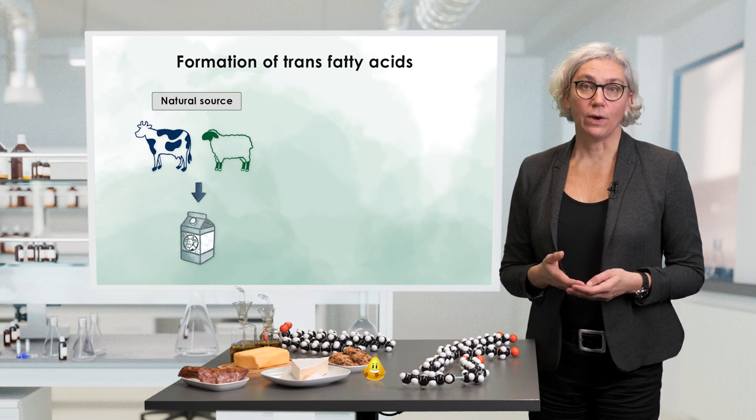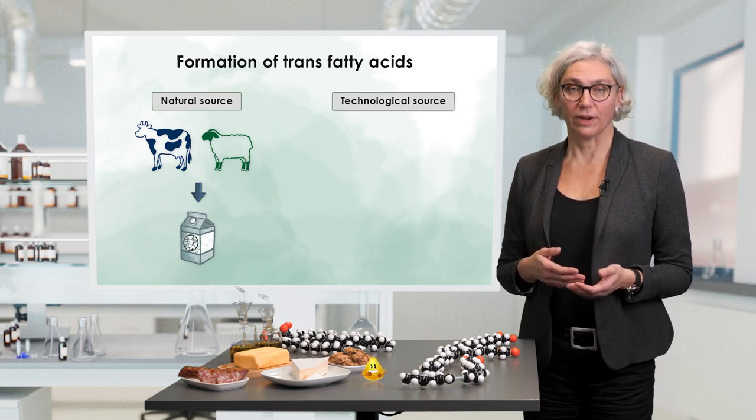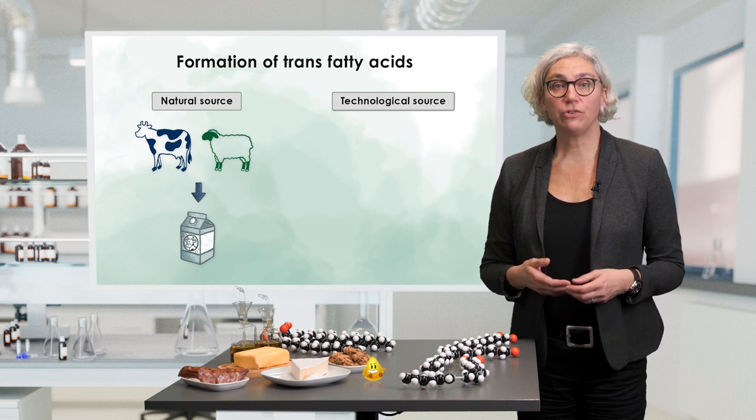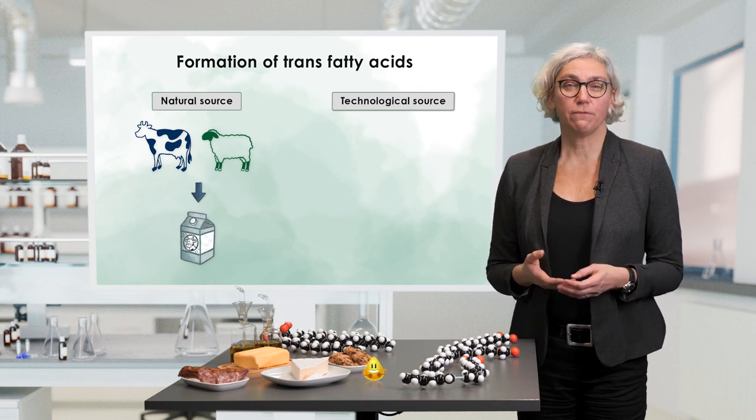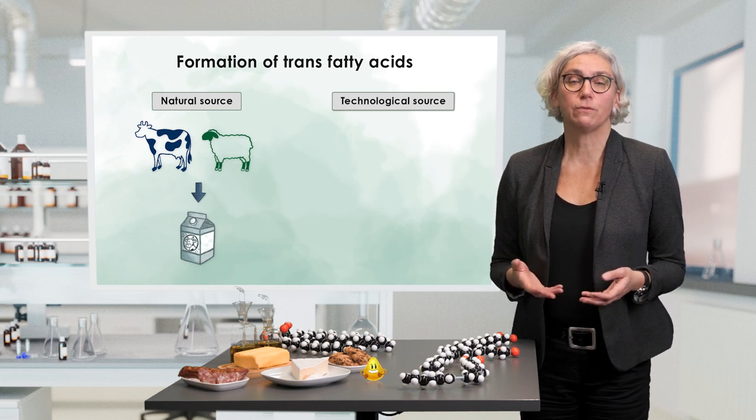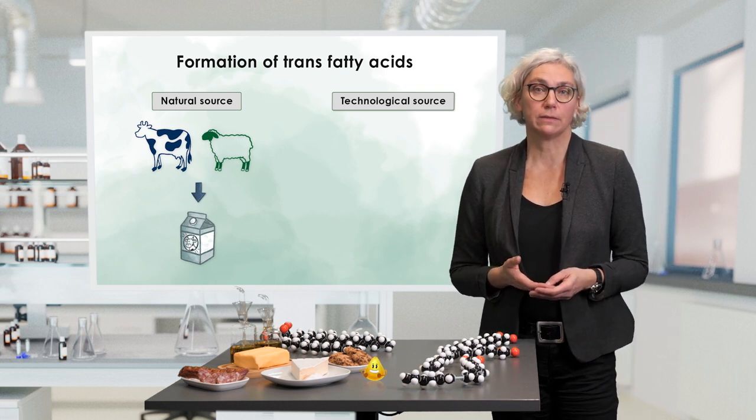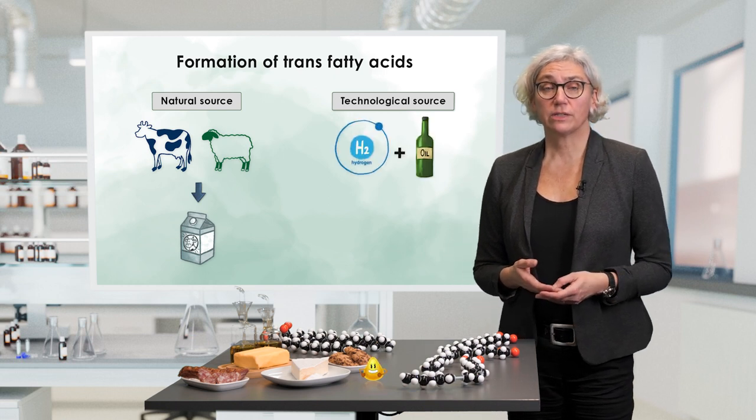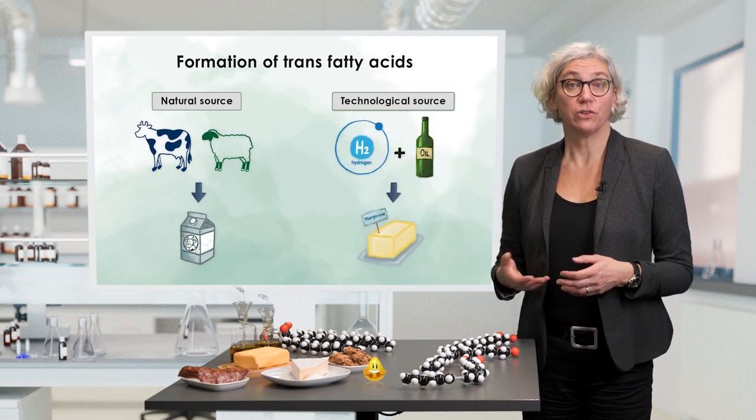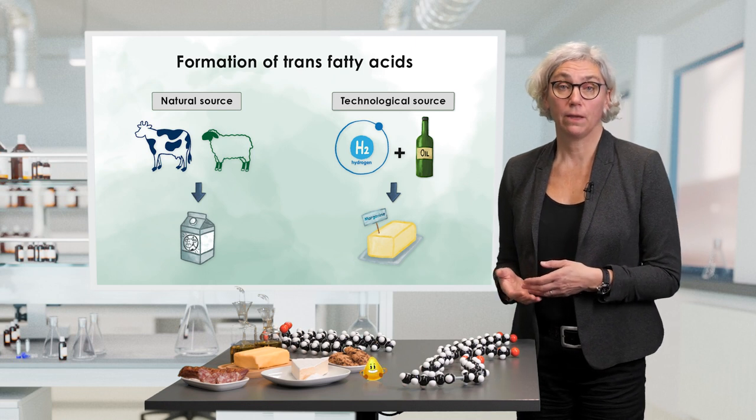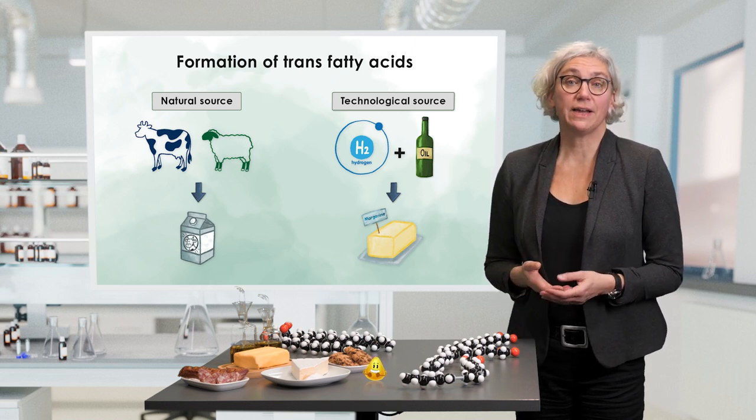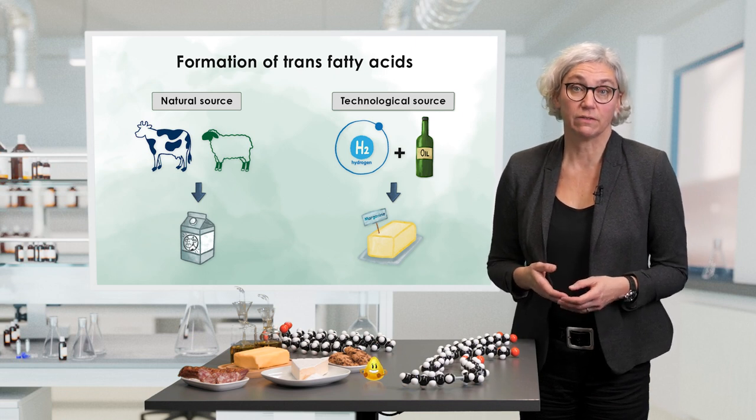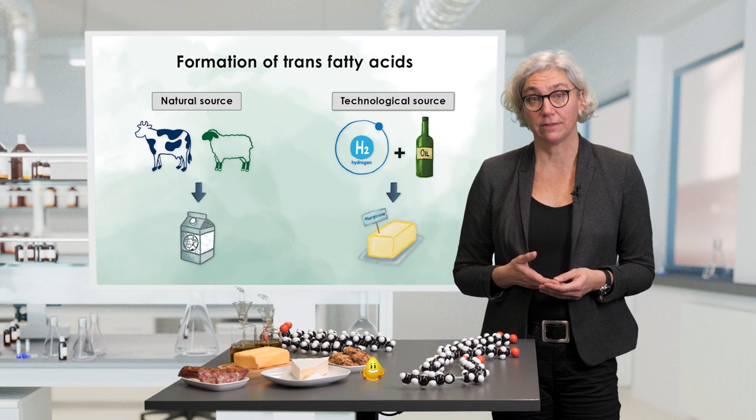Hydrogenation of fats and oils is a technological source for trans fatty acids. From technological point of view, hydrogenation is performed to trigger the physical properties of your fat in the way you need it for the production of certain food commodities. For example, with this technique you can produce a solid or spreadable fat such as margarine from a liquid oil. In addition, hydrogenated fats are usually more stable during processing and storage than fats and oils with high amounts of unsaturated fatty acids.